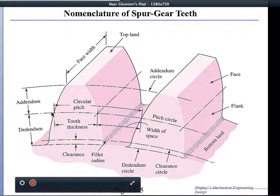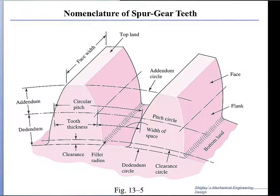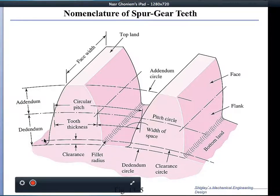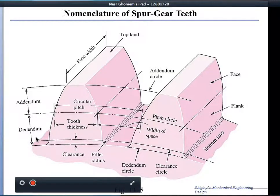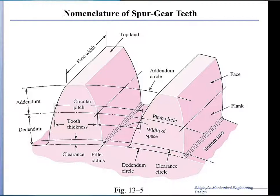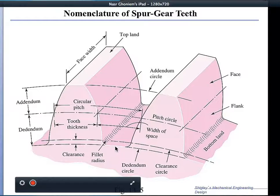On the pitch circle, from one tooth to the next equivalent point we have the circular pitch. There are two distances: from the pitch circle to the top land, called the addendum, and from the pitch circle to the bottom land, called the dedendum. The addendum is something close to the inverse of the diametral pitch, while the dedendum distance is somewhat larger — to create a clearance so that the teeth do not grind into each other and cause excessive wear.